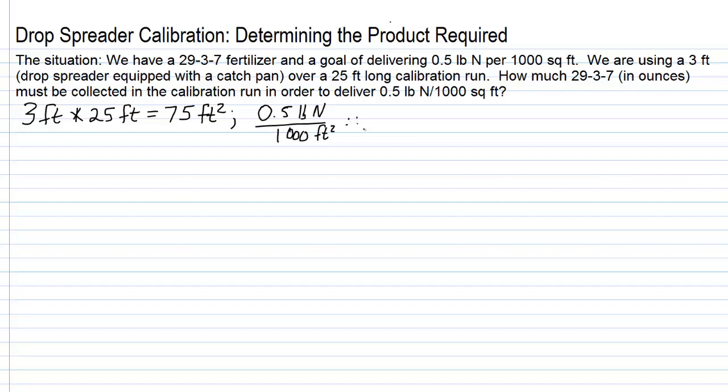So, what would that be, x pound of nitrogen, over our calibration area, which is 75 square feet?